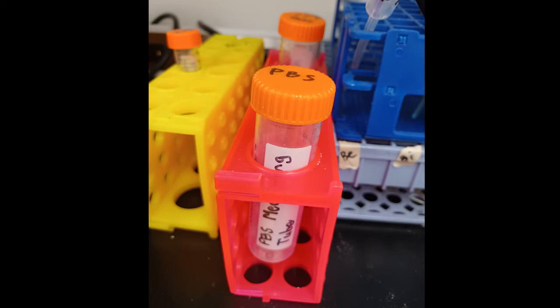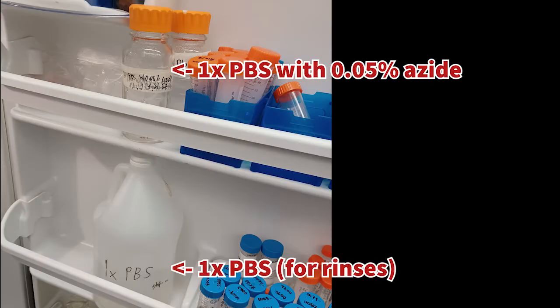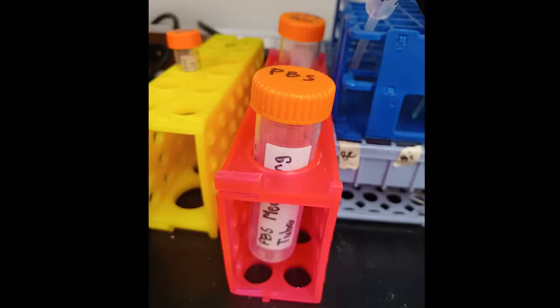To prep for rinsing, we'll want to move some 1x PBS solution from that large jug from the fridge into a smaller container. In the pink holster shown here, there should be a PBS measuring tube. Fill this tube up with that 1x PBS solution from the jug, being careful not to spill.